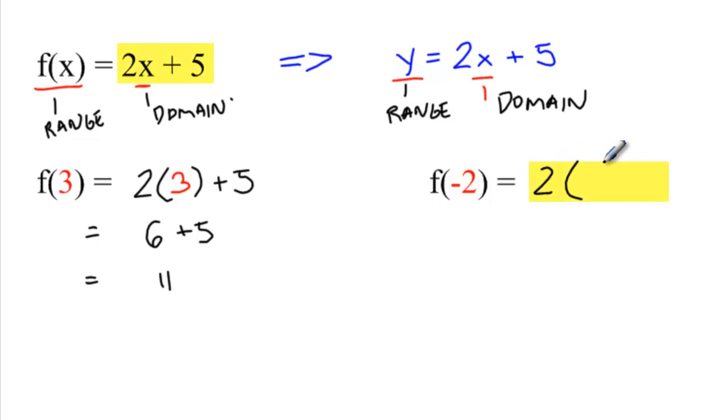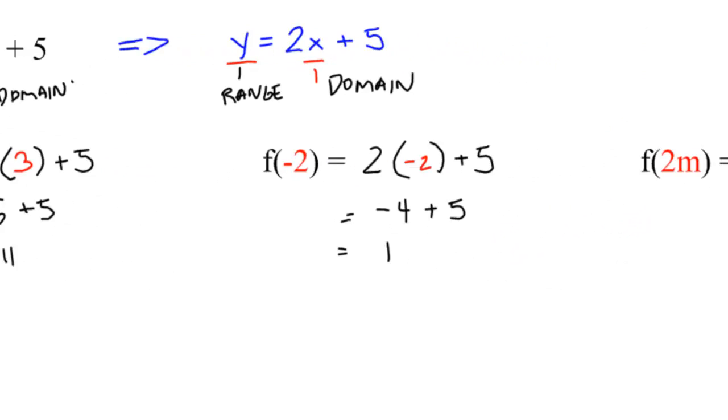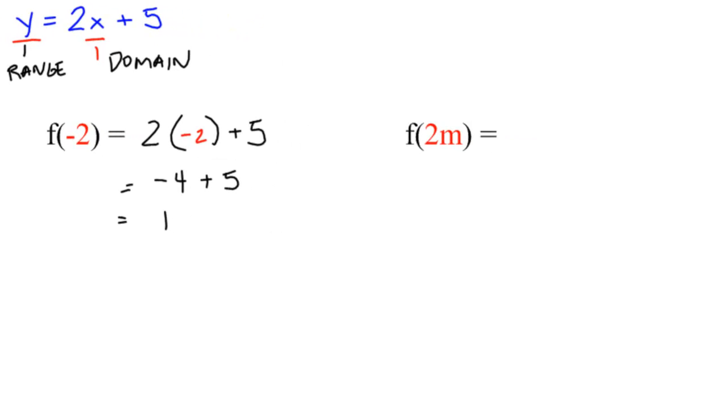Now it's asking for f of negative 2. All you have to do is plug in a negative 2 for wherever you see an x. It's just as simple as that. Simplify it from here, you get negative 4 plus 5, which is equal to 1. Don't do anything else, and that's it.